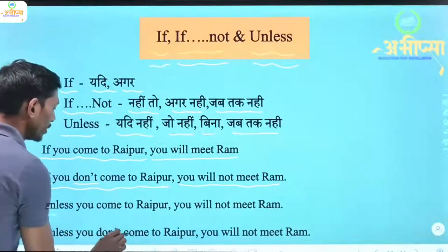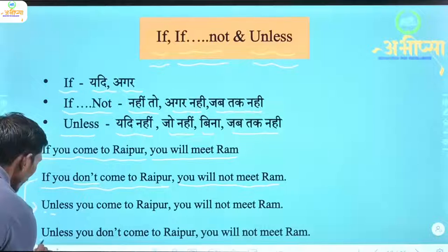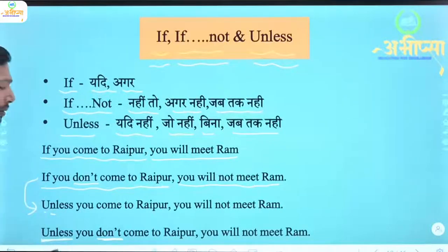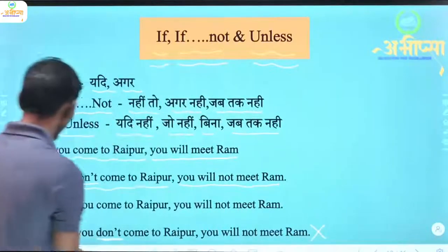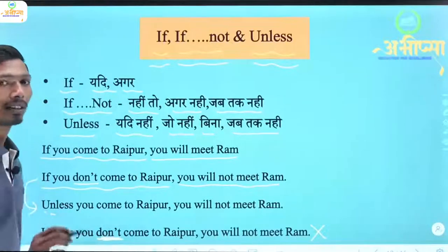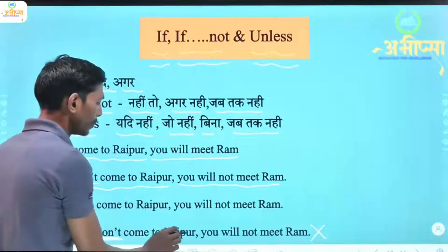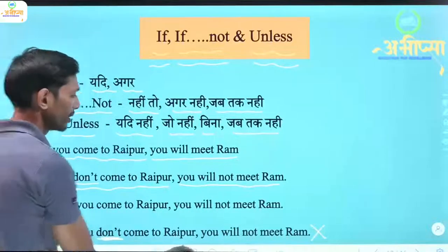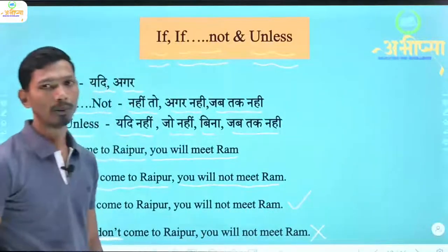'Unless you don't come to Raipur, you will not meet Ram.' — Yahaan pe jaisi humne unless ka use kiya hai aur negative bhi likha hai (don't), toh ye sentence incorrect hoga. So, yadi hum unless ka use karte hain, toh us part mein 'do not' ya 'not' ka use nahi karte. 'Unless you come to Raipur, you will not meet Ram.' — Yeh correct hoga.